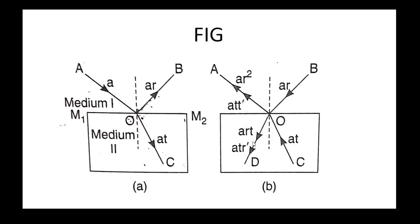Now the directions of the reflected and transmitted waves: this is the reflected wave and this is the transmitted wave. Let r and t be the reflection and transmission coefficients. The amplitudes of the reflected and transmitted waves are Ar and At respectively.